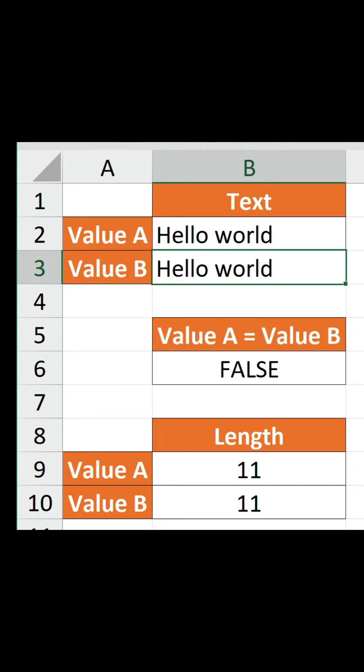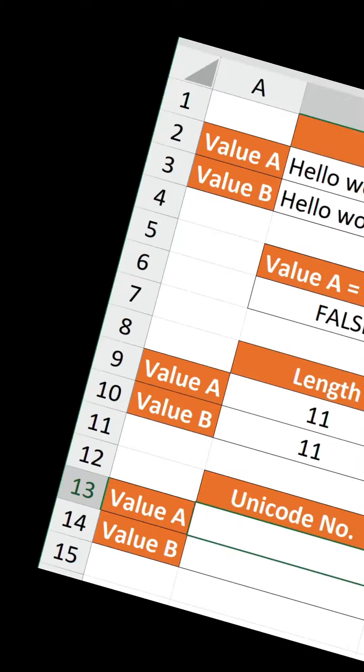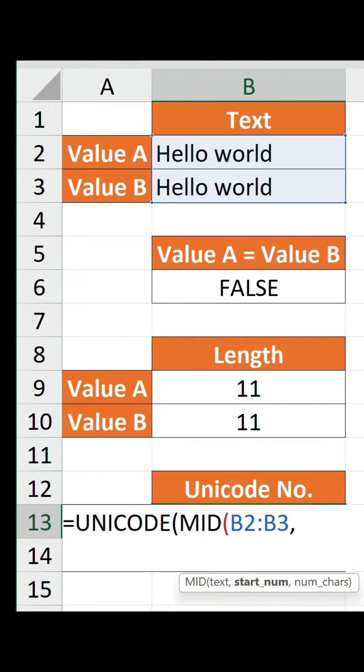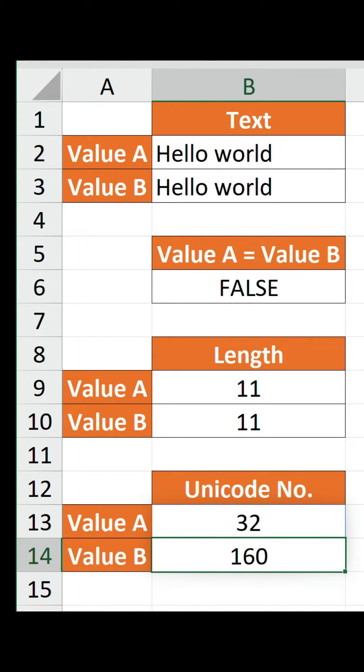So let's construct a formula that checks the Unicode number of each space. Starting with the Unicode function, we can nest mid and specify our range, putting a start number of six because the space is the sixth character and then a one to extract only that character. The numbers are different, 32 and 160.